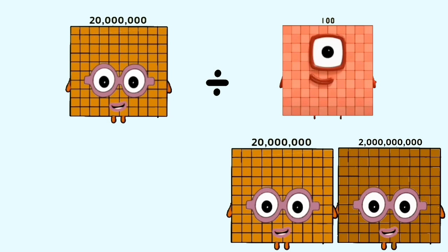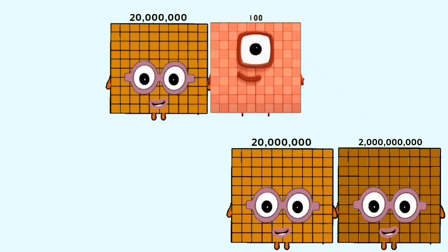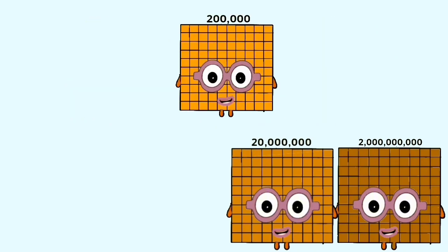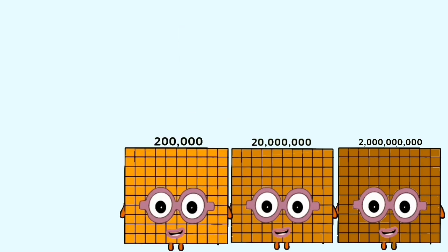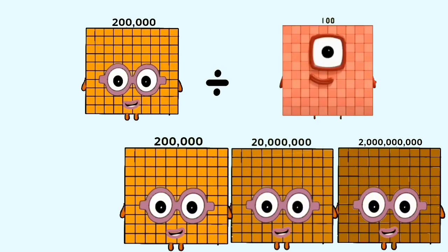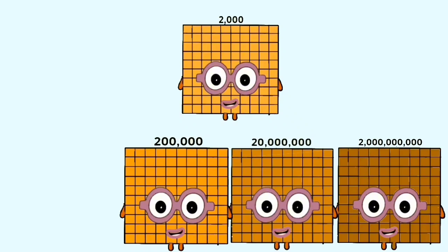20 million divided by 100 equals 200,000. 200,000 divided by 100 equals 2,000.